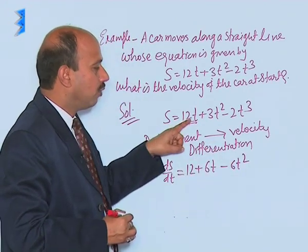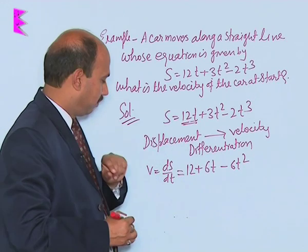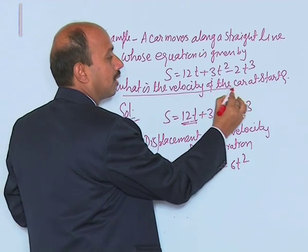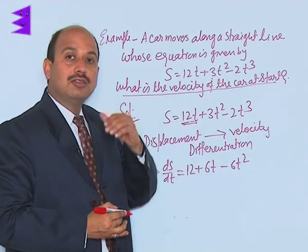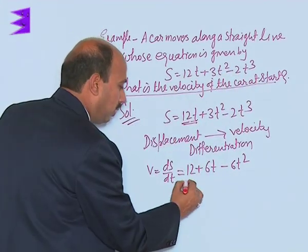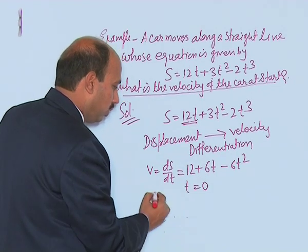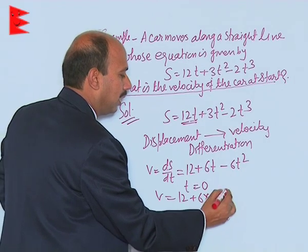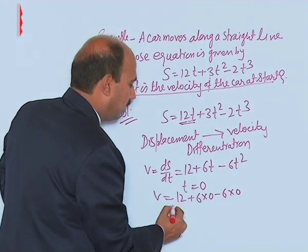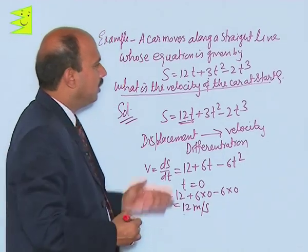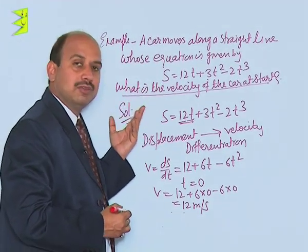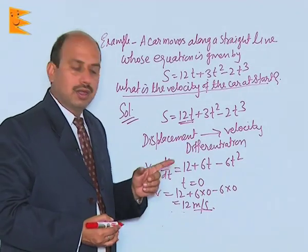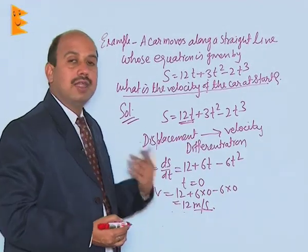This is the derivative of this with respect to time. Now in the question they have asked, what is the velocity of the car at the start? It means at time 0. So you put here t is equal to 0, so you will be getting v is equal to 12 plus 6 into 0 minus 6 into 0, that will be 12 meter per second. Because we took distance in meters and time in seconds, that is why I am writing v is equal to 12 meter per second. This is showing you instantaneous speed.